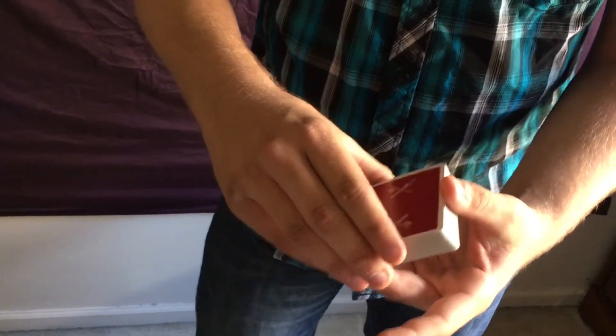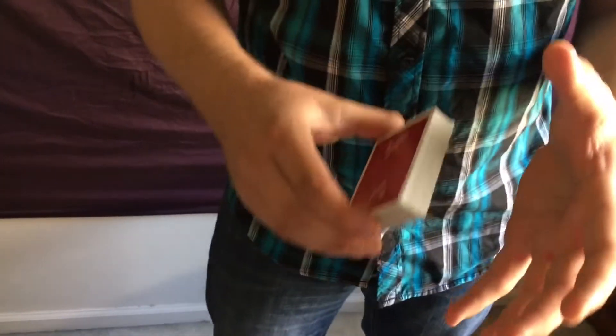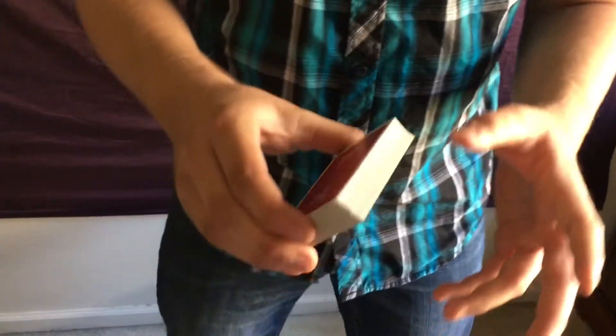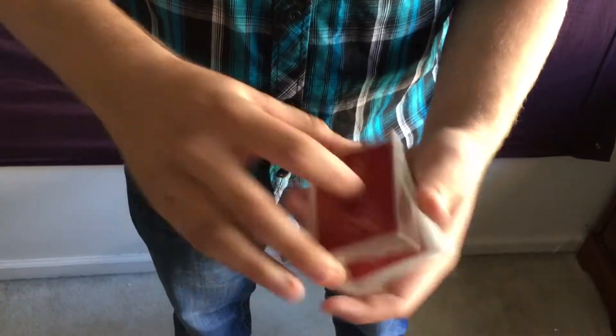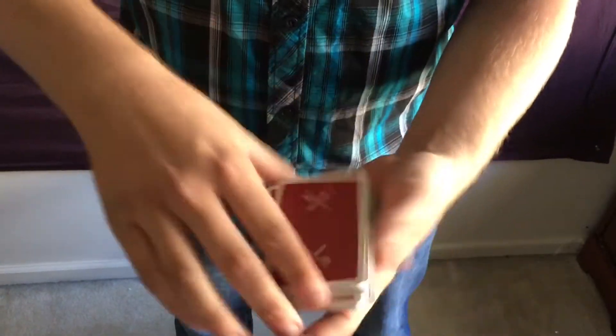The cool thing is once you learn this, you can start combining them and making your own flourishes. You can do this, then do a little bit of that, then spin it like that, and it looks pretty cool.